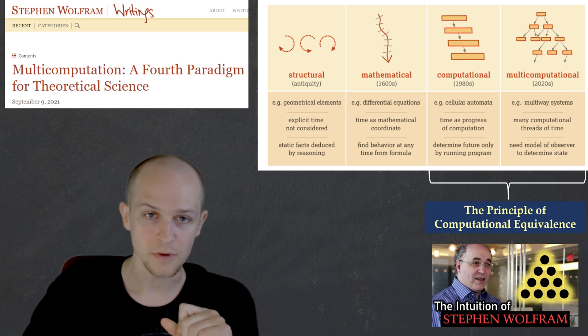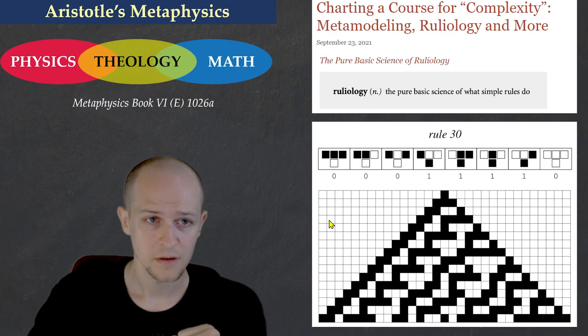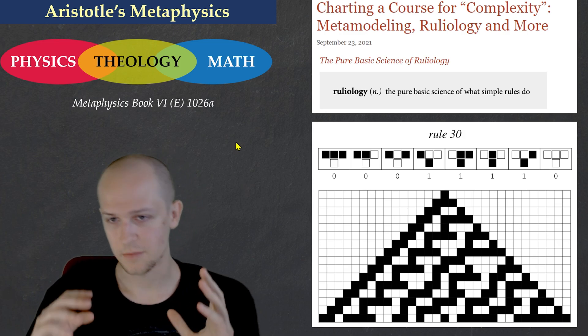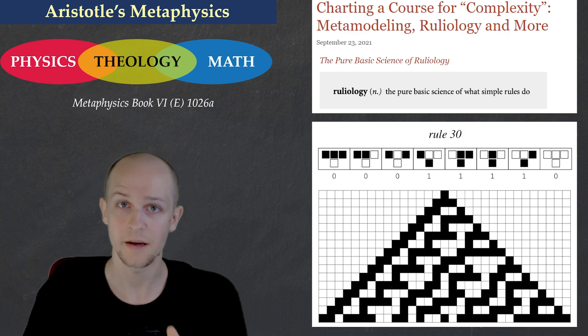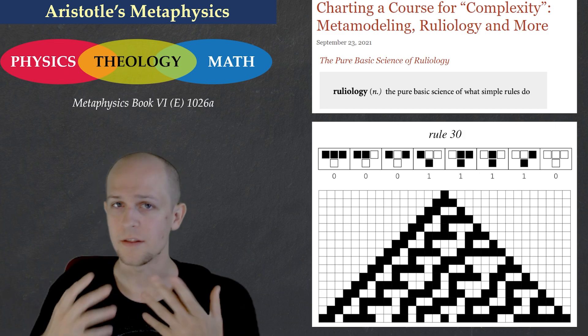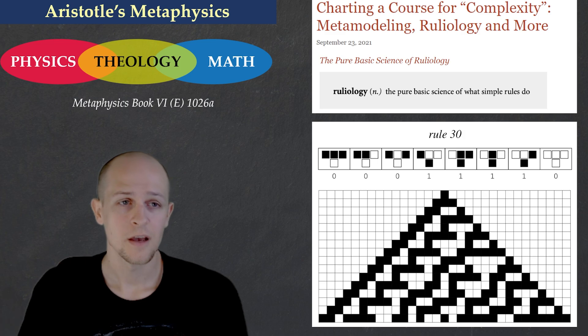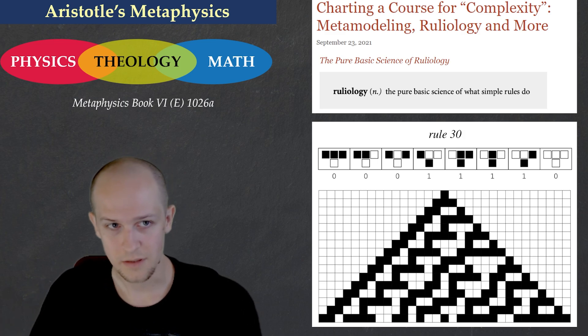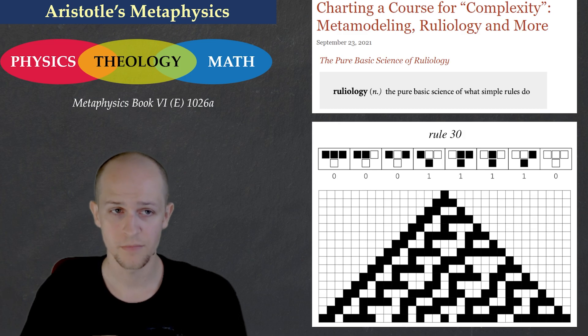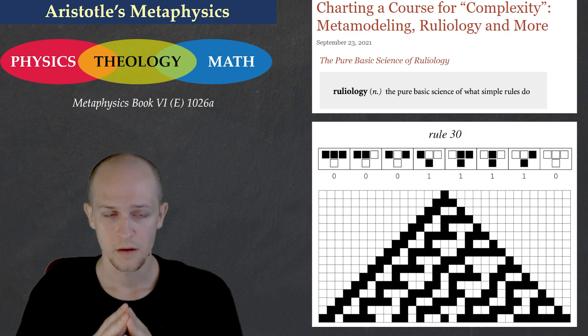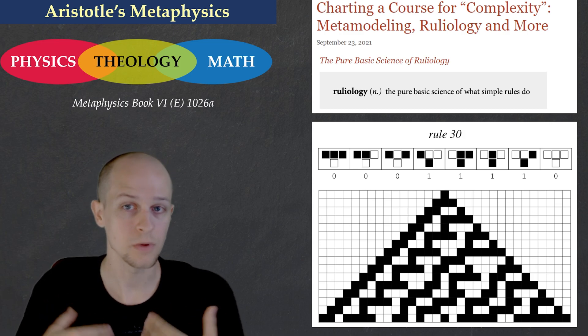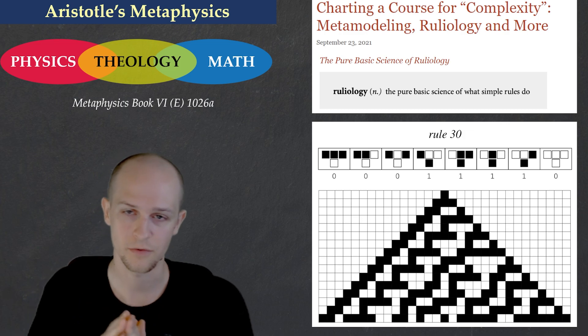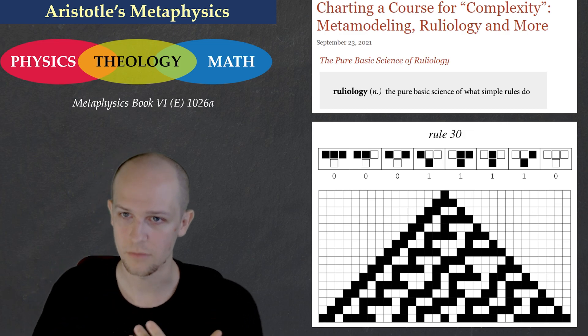So I think the key to understanding Wolfram's talk about the principle is to look at Aristotle's metaphysics. In book six, Aristotle claims that there's three kinds of theoretical science: physics, mathematics, and then some general third science. He calls it theology, but he also names it first philosophy and wisdom and the science of being qua being. I'm going to stick with theology for this video and you'll see why later on. Wolfram's term for this third science is ruleology. That's his definition there from last September, the pure basic science of what simple rules do.